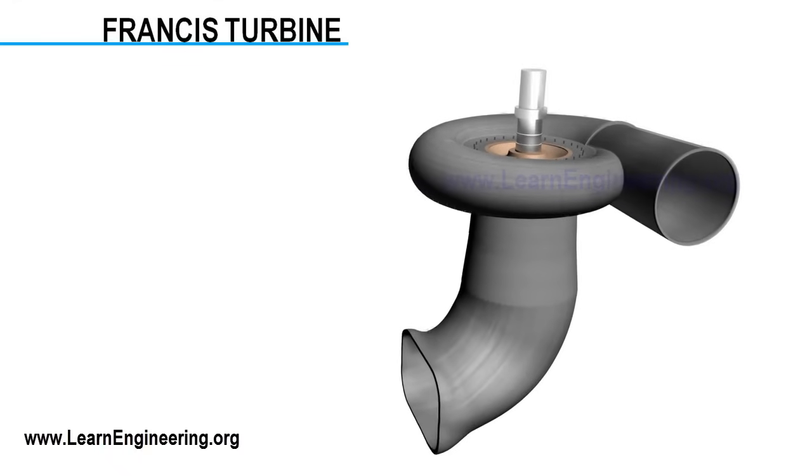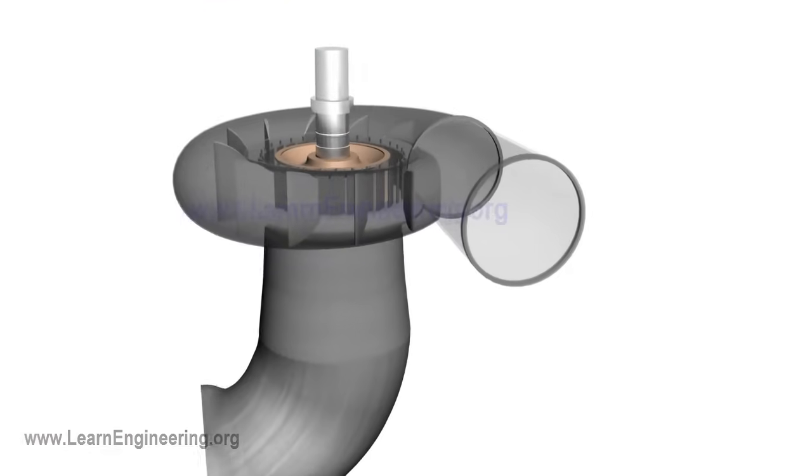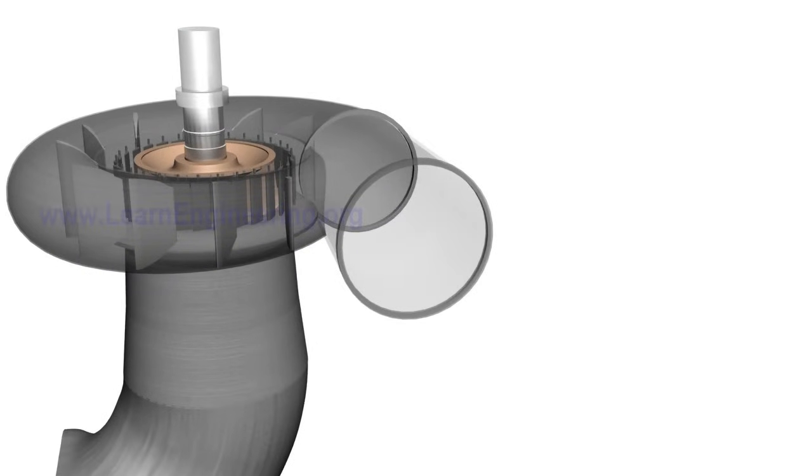Francis Turbines are the most preferred hydraulic turbines. They contribute about 60% of the global hydropower capacity, mainly because they can work efficiently under a wide range of operating conditions.